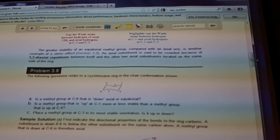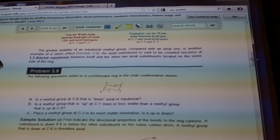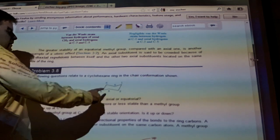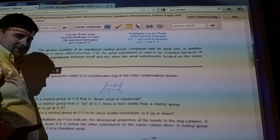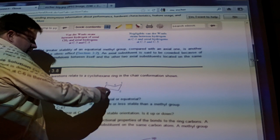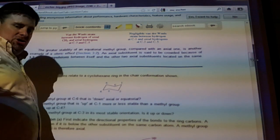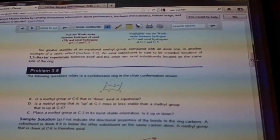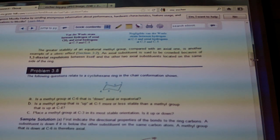So if you place a methyl group at C3 in its most stable orientation, is it up or down? Whichever one is not axial will be your answer. This one's pointing up. Axial. So that's the least stable. The one going to the equatorial position should be the most stable. And sure enough, it will.